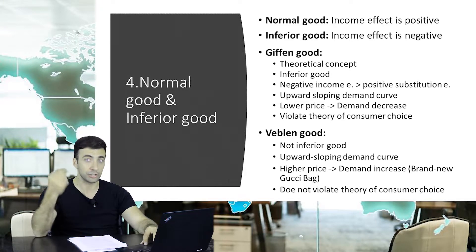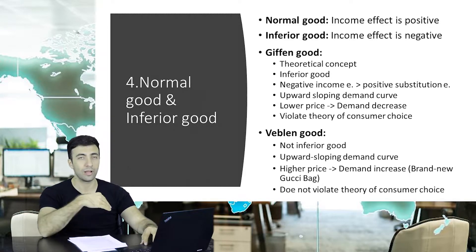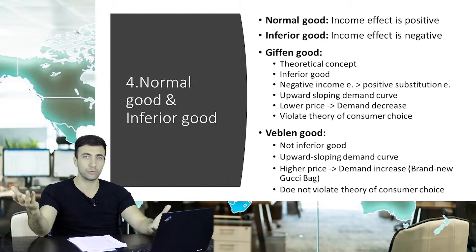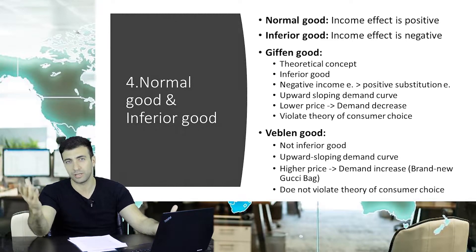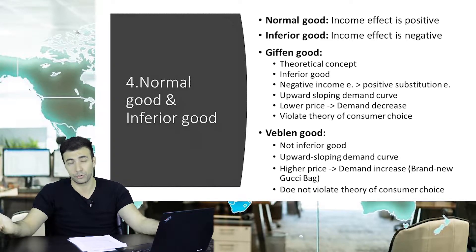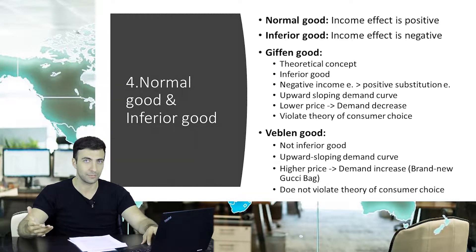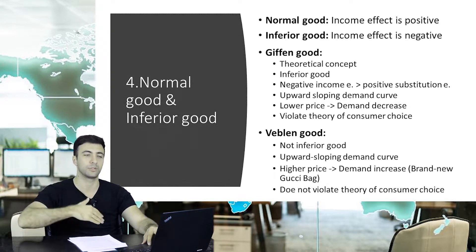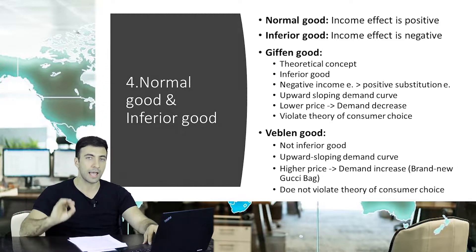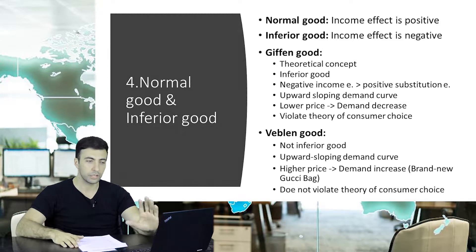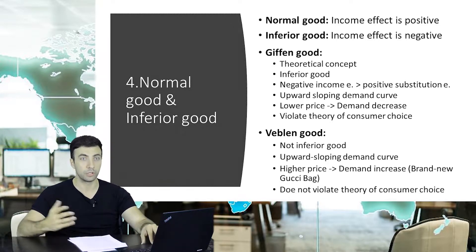Interestingly, Giffen goods have an upward-sloping demand curve. In all normal cases the demand curve is downward sloping, but in Giffen goods it is upward sloping. So in Giffen goods, a lower price leads to lower demand — that's why the slope is positive, meaning upward. Another important point: Giffen goods violate the theory of consumer choice.